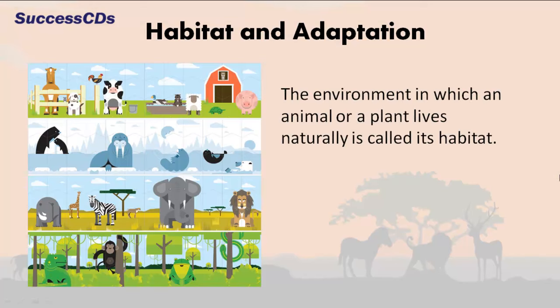The environment in which an animal or a plant lives naturally is called its habitat. Air, land and water are the habitats for different kinds of animals.